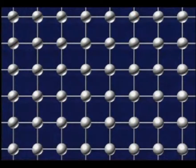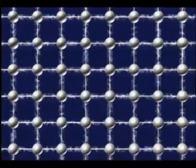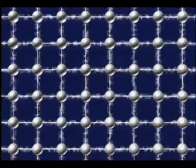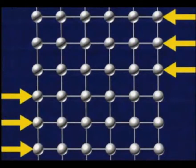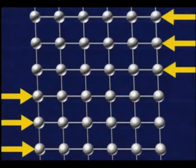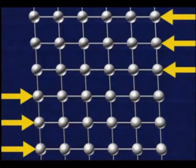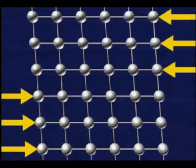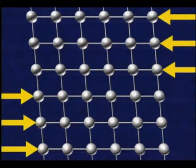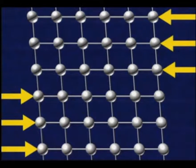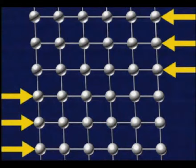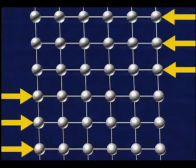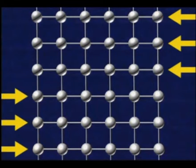All atoms in these crystalline structures are held in place by electromagnetic attraction to neighboring atoms. If a force or load is applied to a metal, these electromagnetic bonds stretch, allowing the atoms to move slightly. When the load is removed, the bonds pull the atoms back into position.